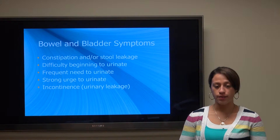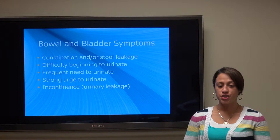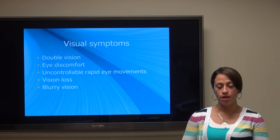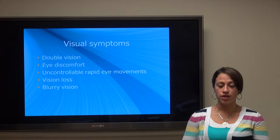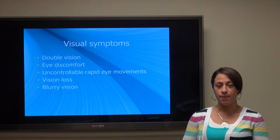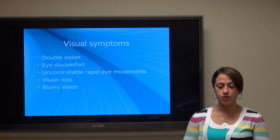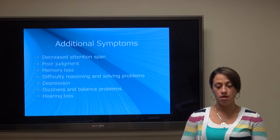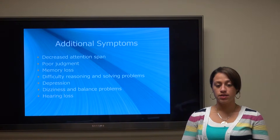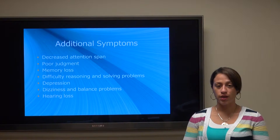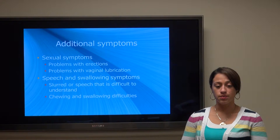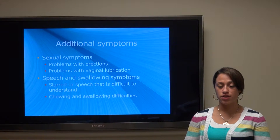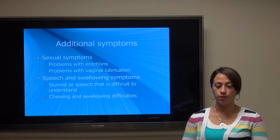There are also more severe symptoms. Sometimes people have difficulty initiating urination, feel like they have to go very frequently, or experience incontinence. Visual symptoms include double vision, eye discomfort, uncontrollable rapid eye movements, vision loss, and blurry vision. Additional symptoms can include decreased attention span, poor judgment, memory loss, difficulty reasoning or problem solving, depression, dizziness, balance problems, and hearing loss. There are also sexual symptoms as well as speech and swallowing difficulties — speech may be slurred or hard to understand, and patients may have chewing or swallowing difficulties.